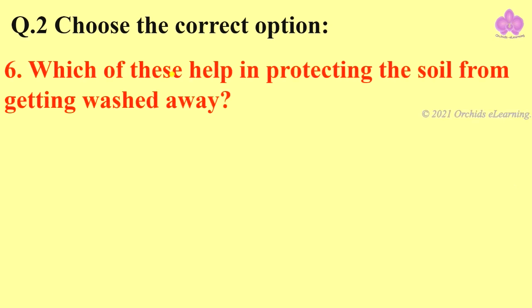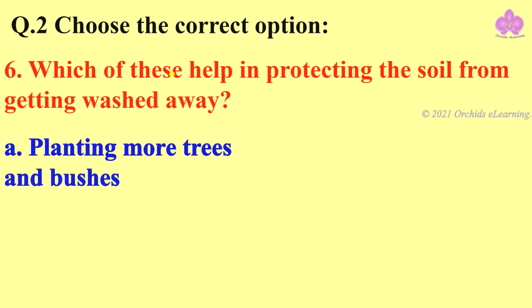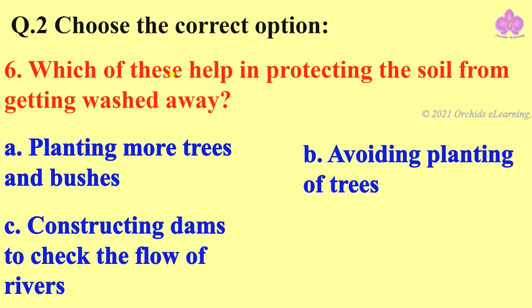Question number six: which of these help in protecting the soil from getting washed away? Option A: planting more trees and bushes. B: avoiding planting of trees. C: constructing dams to check the flow of rivers. And D: both A and C.